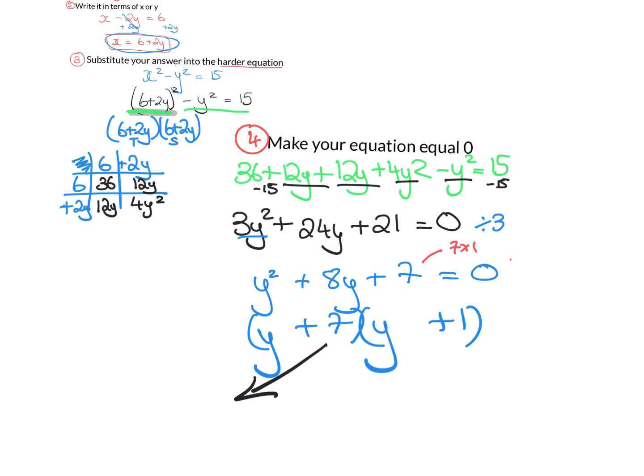So you take your two brackets, or in some cases you might only have one thing in bracket if it's taken out what's common, and you let your brackets equal 0. So y plus 7 equals 0, y is equal to minus 7. And then y plus 1, so this bracket equals 0, and y is equal to minus 1.